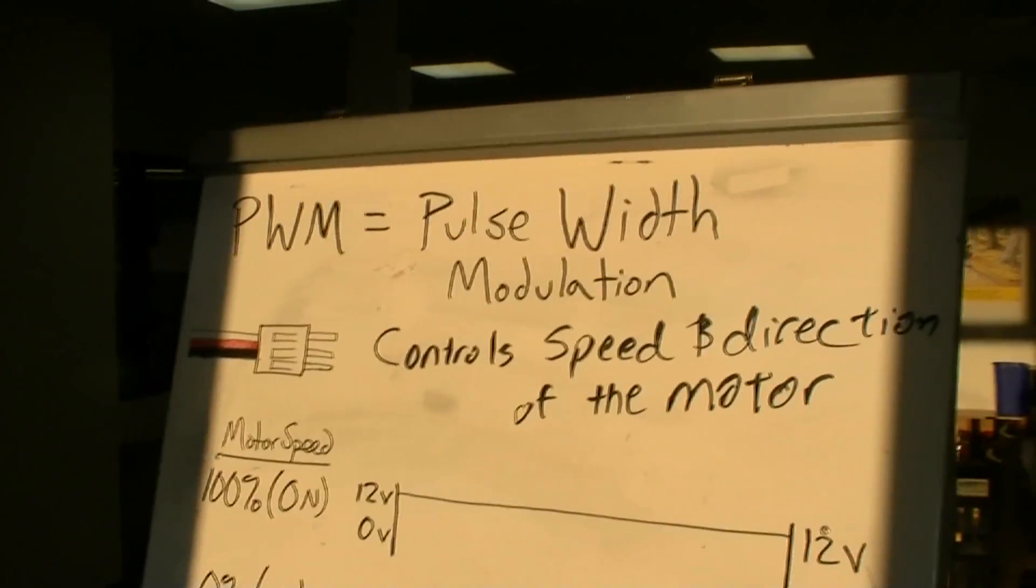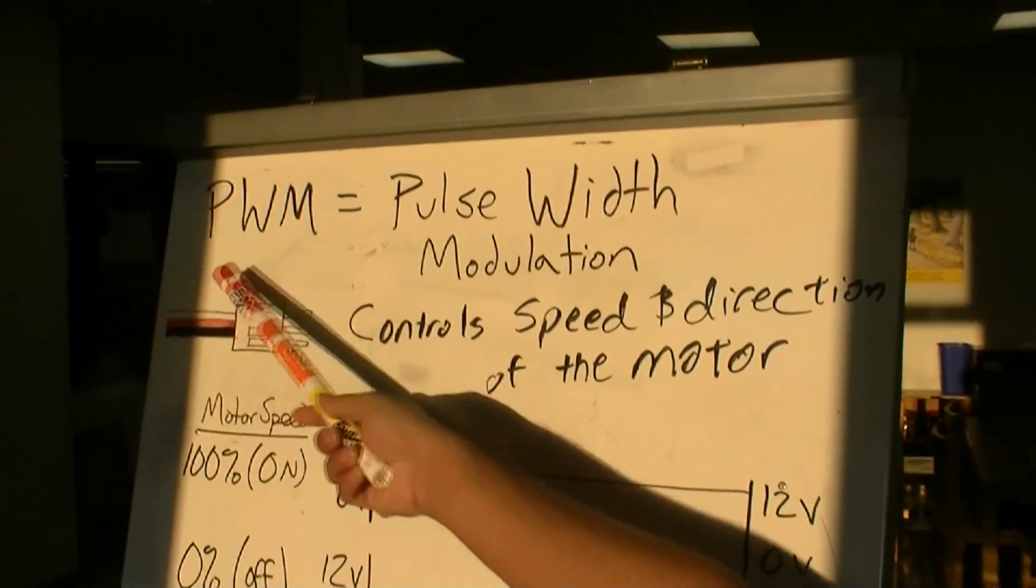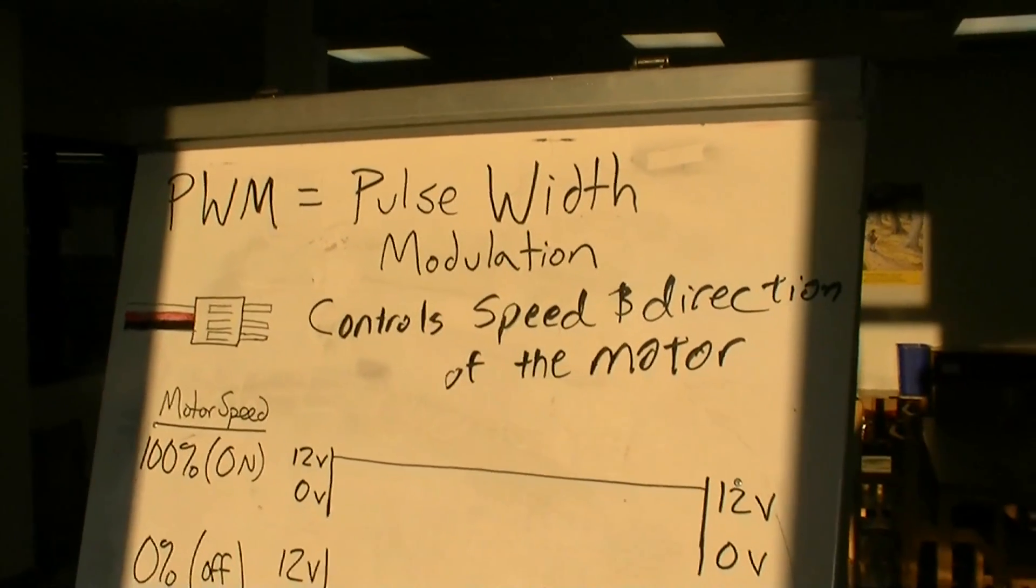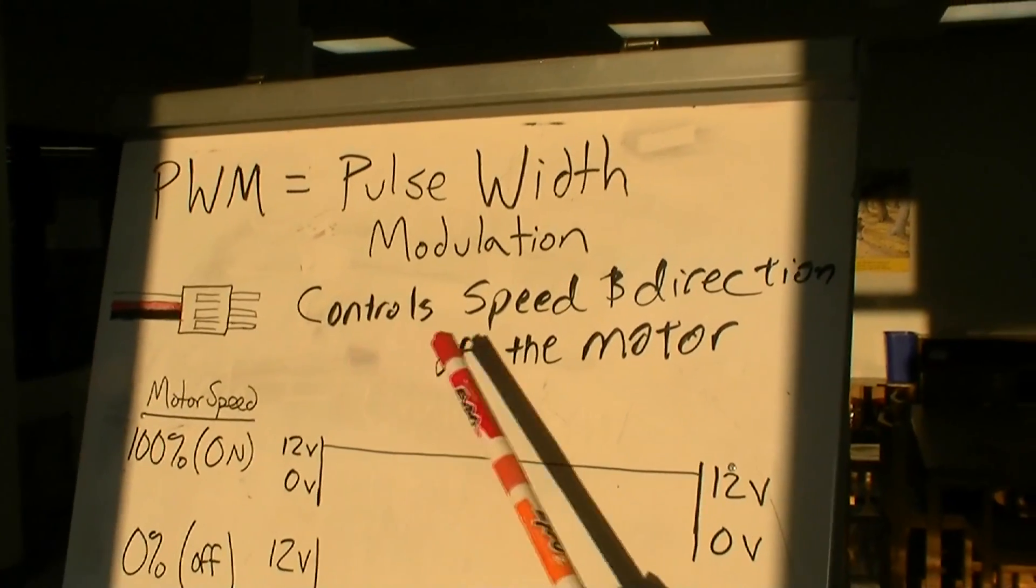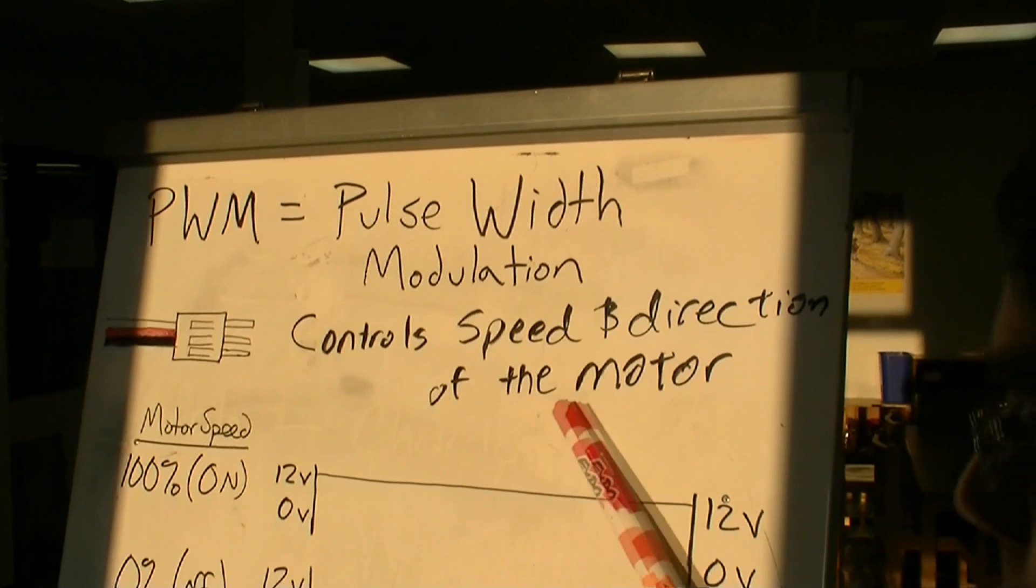So now we're going to get a little more in detail about PWM. PWM means Pulse Width Modulation, and what it does is it controls the speed and the direction of the motor.